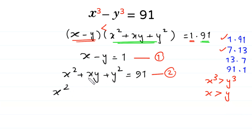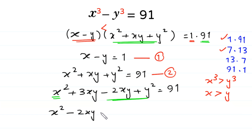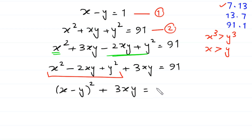Now we solve Equation 2. We rewrite x squared plus xy plus y squared by splitting xy as plus 3xy minus 2xy, giving x squared minus 2xy plus y squared plus 3xy equal to 91. We combine x squared minus 2xy plus y squared as a perfect square: x minus y whole squared plus 3xy equals 91.